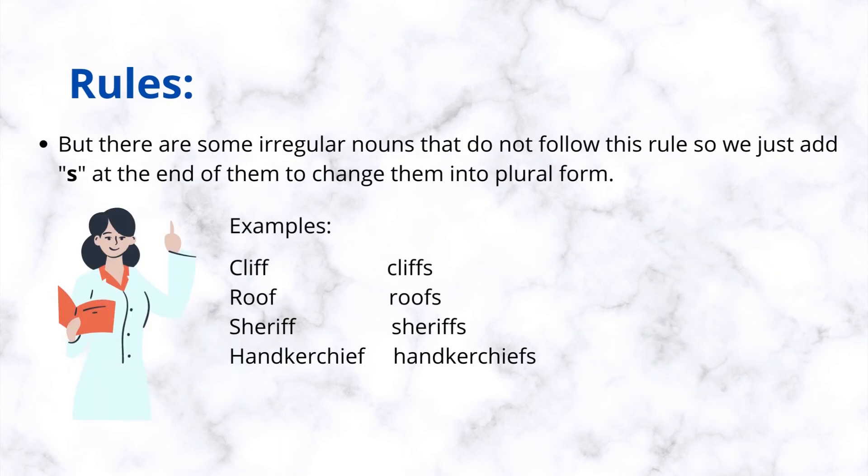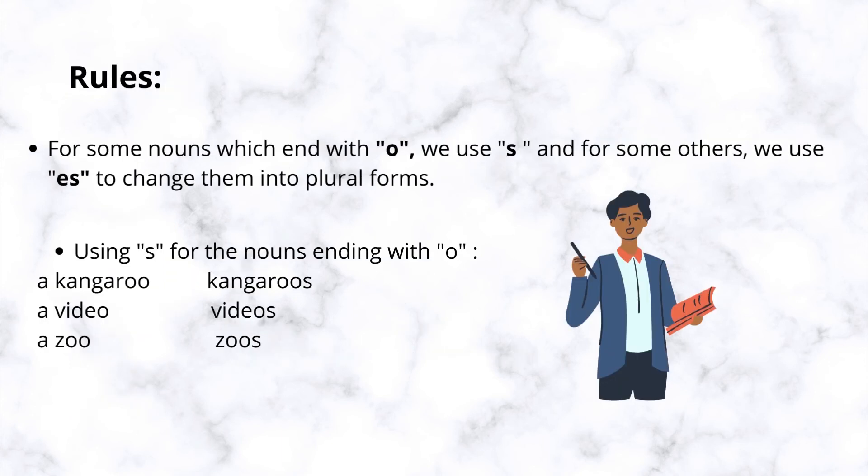But there are some irregular nouns that do not follow this rule, so we just add s at the end of them to change them into plural form. Examples: cliff, cliffs. Roof, roofs. Sheriff, sheriffs. Handkerchief, handkerchiefs.